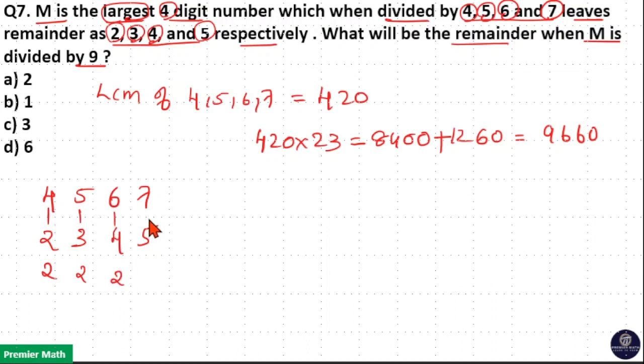Difference between 6 and 4 is 2, difference between 7 and 5 is 2. That is, the common difference is 2. Now we need to subtract 2 from 9,660. So M is equal to 9,660 minus 2, because here common difference is 2.